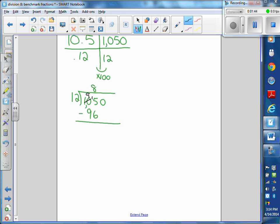Then you would bring down your 0 and you'd say 12 goes into 90 how many times? 7, so 12 times 7 is 84. When you subtract you get 6, so it's 87 and 6/12, which is the same thing as 87.5 because that's a benchmark fraction, 6/12.